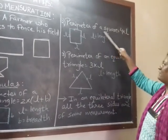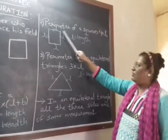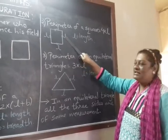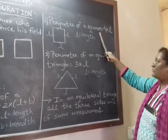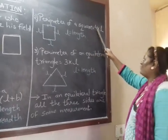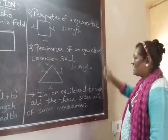Second is perimeter of a square. You know that in square, all the four sides are same. So we do not have breadth. All the four sides are length. So the formula to find out perimeter of a square is 4 into L, that is length.